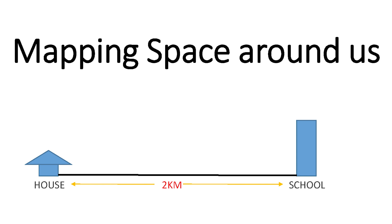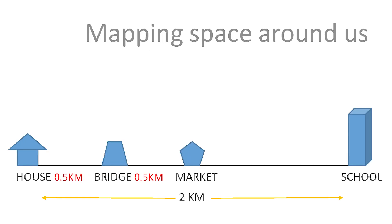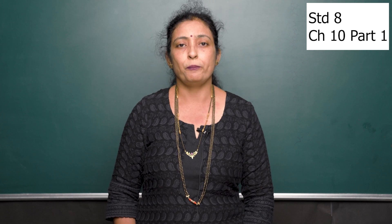But when we are drawing a map, whatever assumptions we make should be proportionate. For example, if there is a market at one kilometer and a bridge at half a kilometer from your house on the same way to the school, you will mark a symbol for the market exactly between the school and the house, because it is at half the distance. This is the concept of making a map.